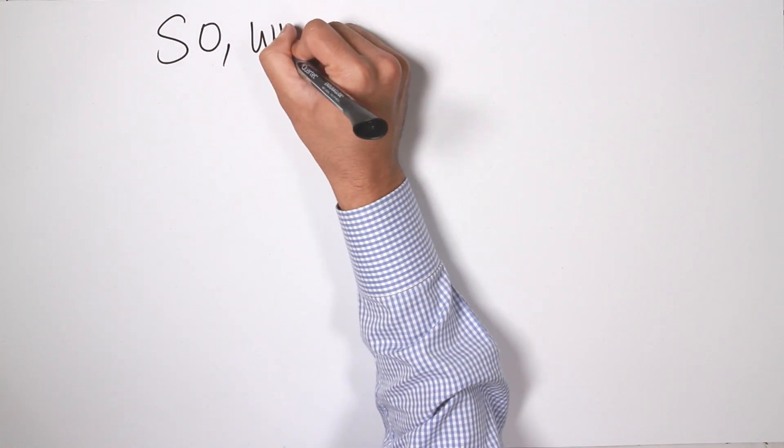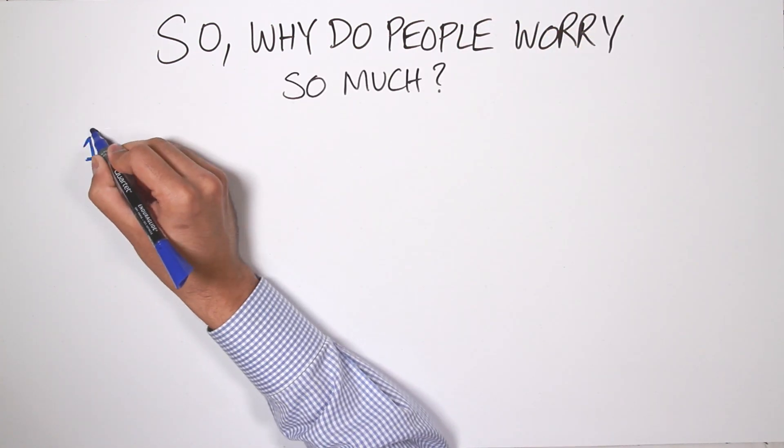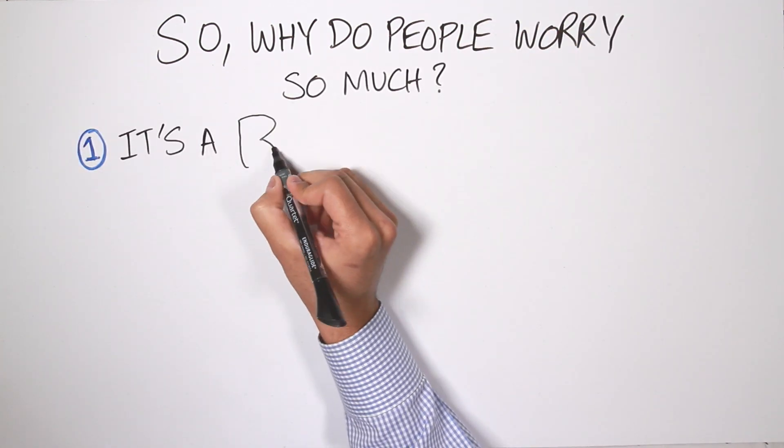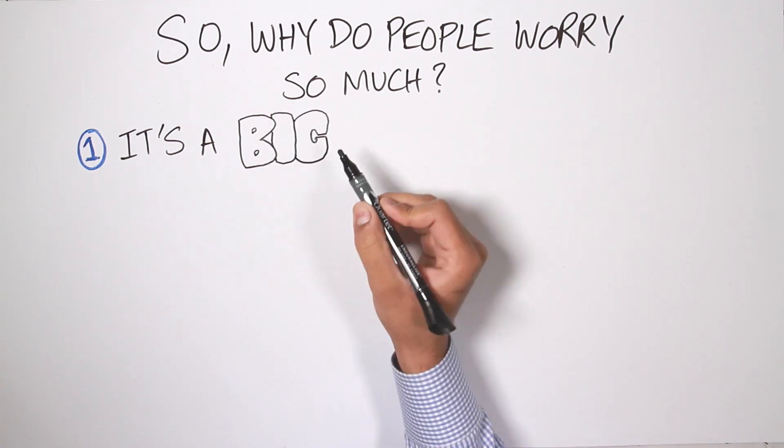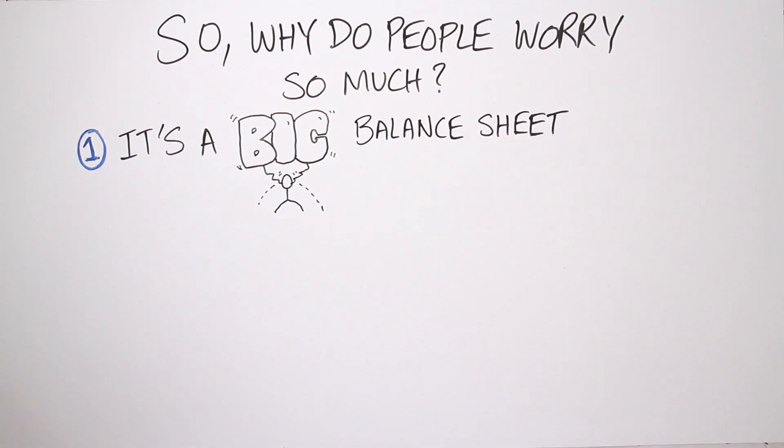So, why do people worry so much? Well, three reasons. First, it is a big balance sheet. The Fed's balance sheet is now $4.5 trillion, and people think, well, surely that must have some impact on the market when it begins to shrink.